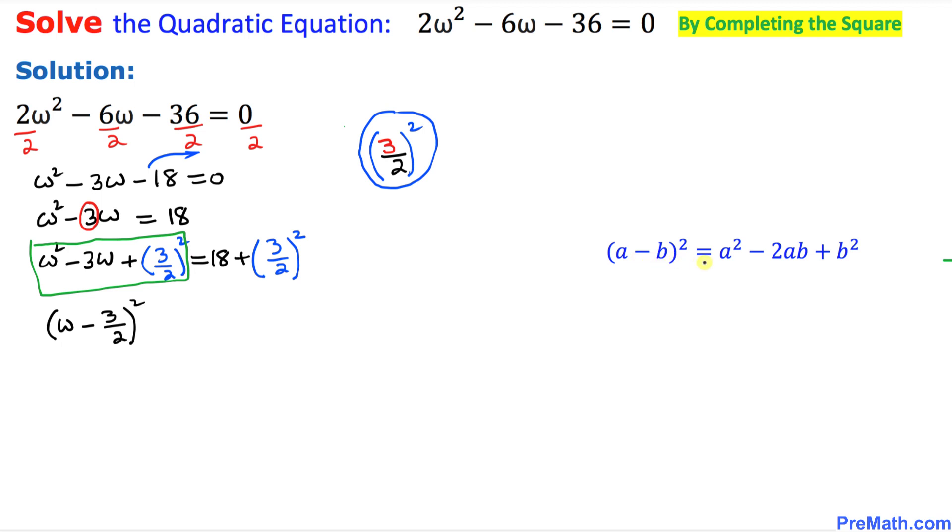We are using this fact: (a - b)² = a² - 2ab + b². On the right hand side, 18 plus (3/2)² is going to become 9/4.